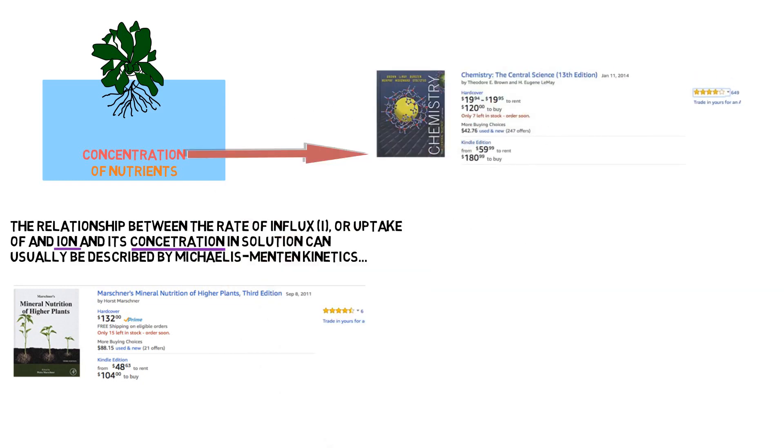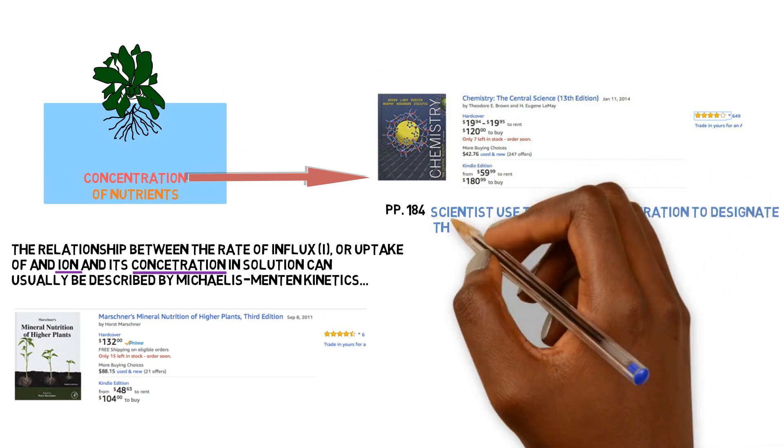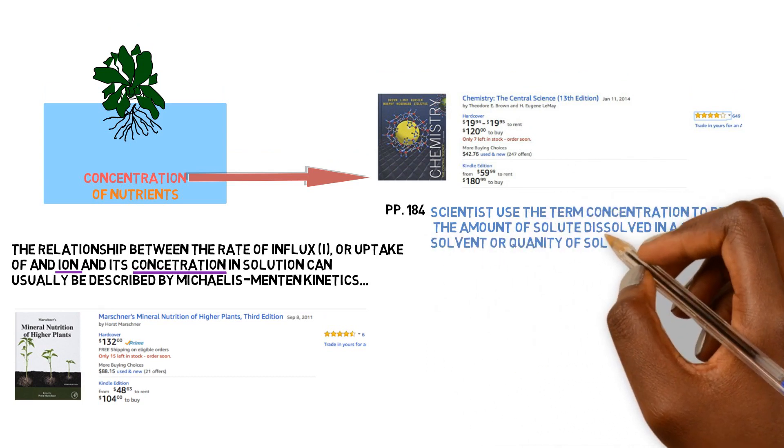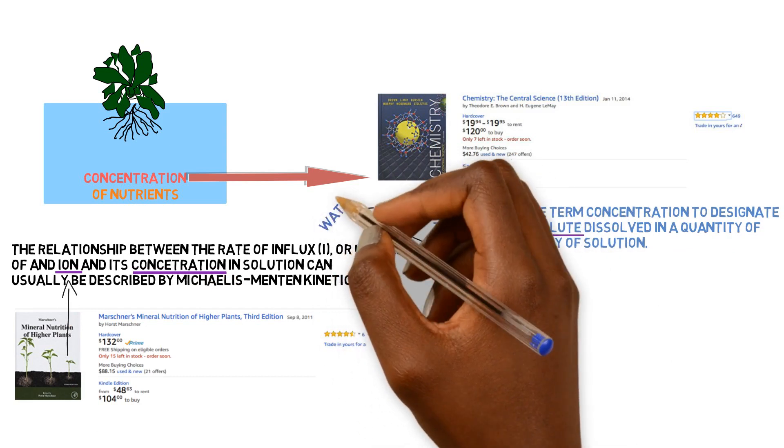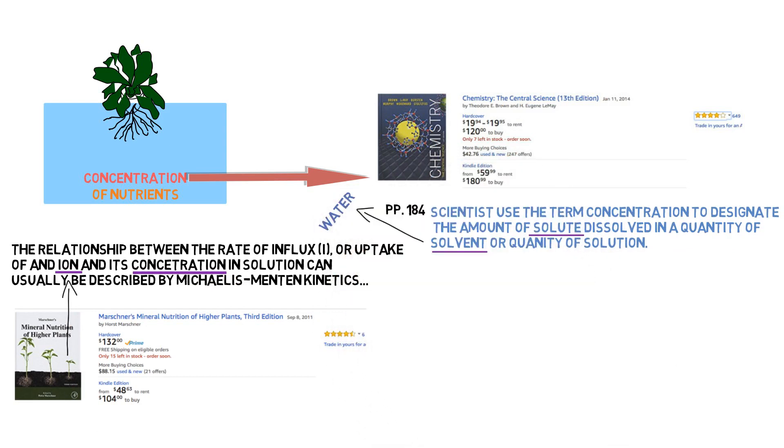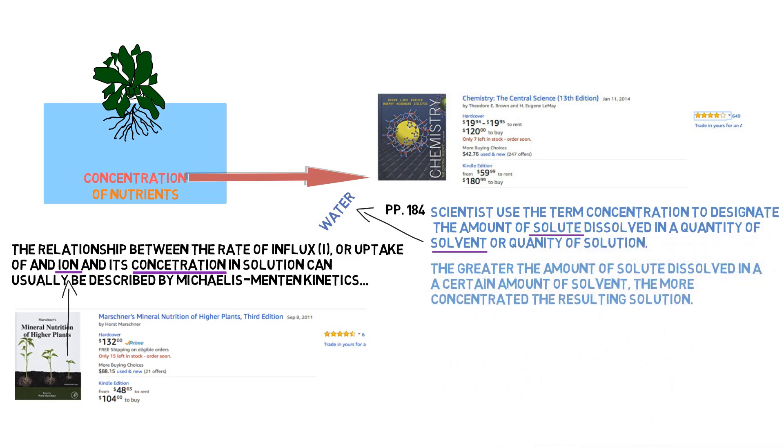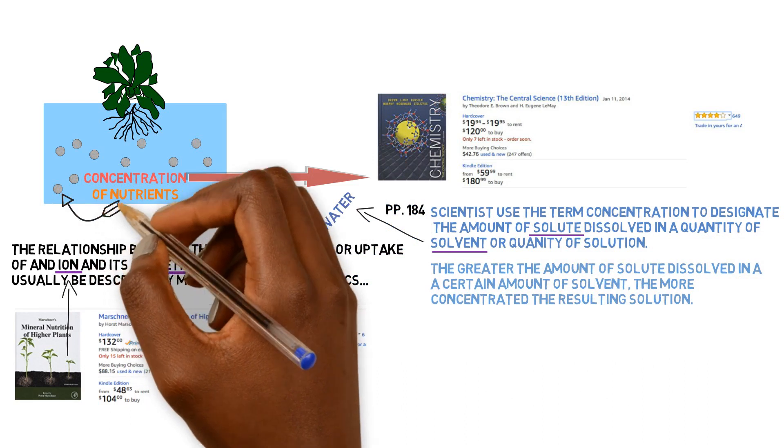Page 184, The Central Science: Scientists use the term concentration to designate the amount of solute dissolved in a given quantity of solvent or quantity of solution. The solute in this case are the nutrients or the ions being dissolved inside of the solvent, which is the water. So the amount of nutrients being dissolved in the water, that's giving the concentration. The greater the amount of solute dissolved in a certain amount of solvent, the more concentrated the resulting solution.